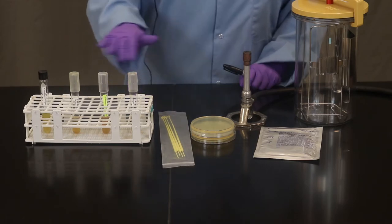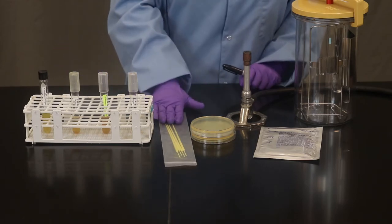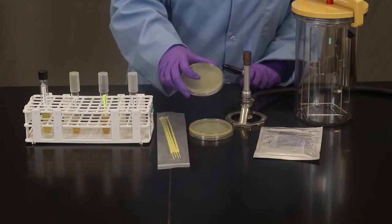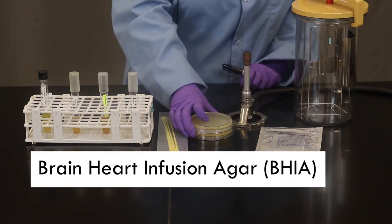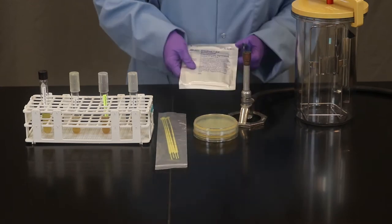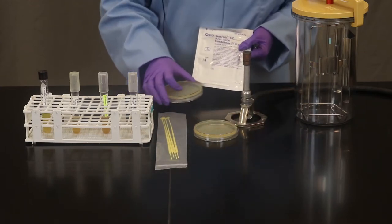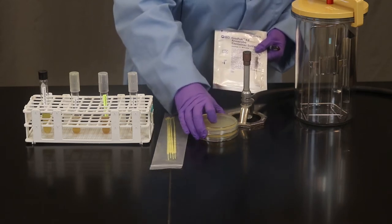In addition to your organisms you're going to need plastic sterile loops, two petri plates both of which are called brain heart infusion agar. We're going to incubate one plate in an aerobic condition just out in the air and we're going to incubate the second plate in an anaerobic condition.